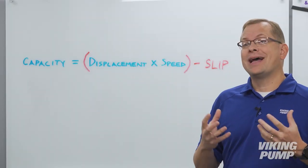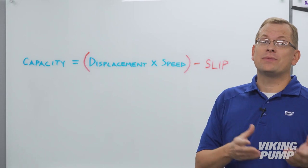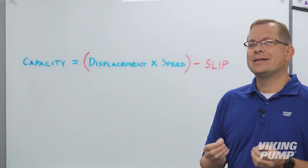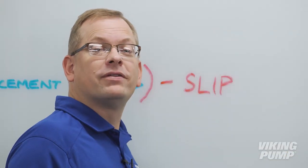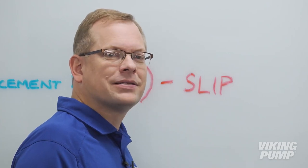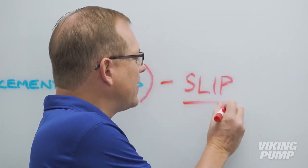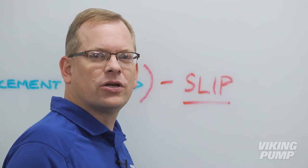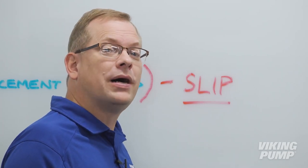So a PD pump's actual capacity will be displacement times speed minus slip. Okay, so I've defined slip, and I've told you how it affects a pump's capacity. But how do we determine this value? How much slip is in your pump, and how much slip is too much?